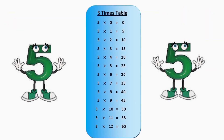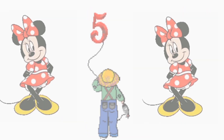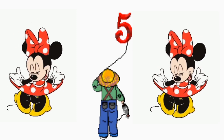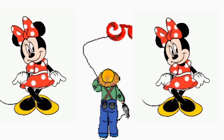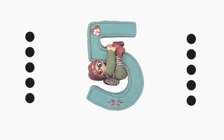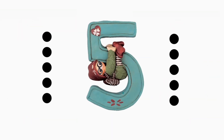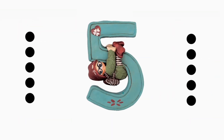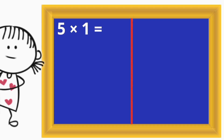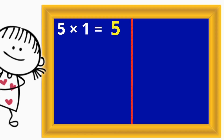This is the table 5 song. Multiplication table of 5 — let's sing it one more time. 5 x 1 is 5.